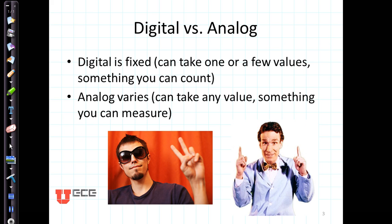Digital is basically a fixed value. It can take on one or a few values. It's something you can count. Digital is like the digits on your hand. Analog values vary. They can take on any value. There's something you can measure such as the distance between your hands.